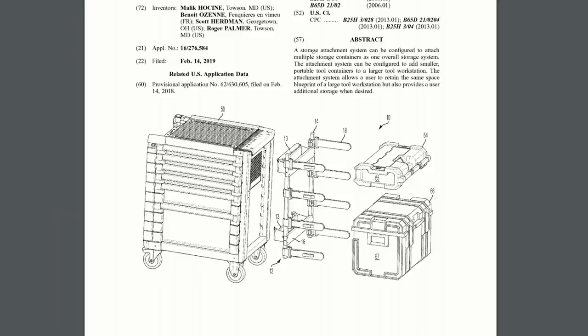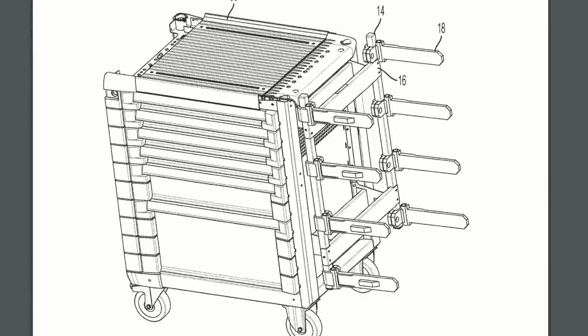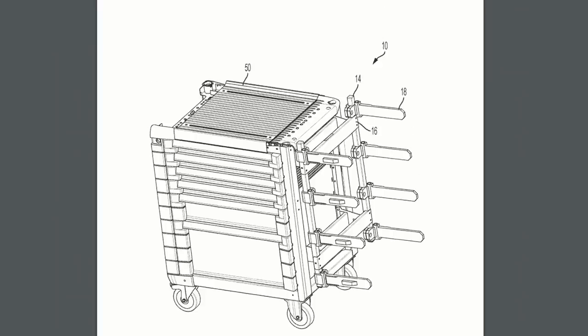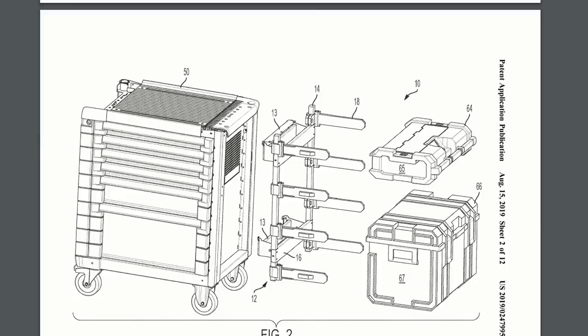This next one is a tough system compatible workstation. So they've already got rails that you can mount your tough system boxes to the wall on. Now they're taking these rails and they're putting them on a work cart. So you've got a little tool cart that you can move around. And if you've got some bigger tools that you want to keep in a tough system container, you can do that.